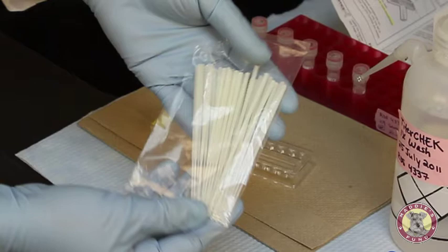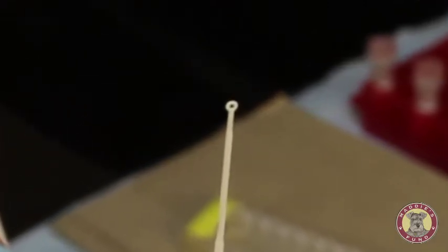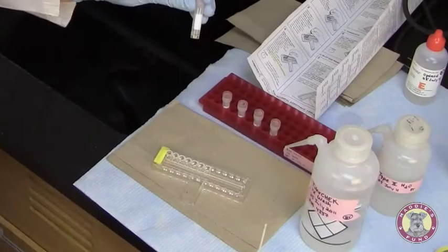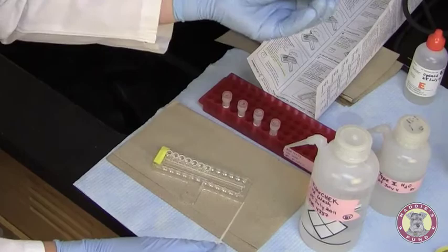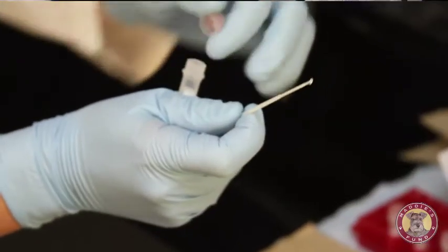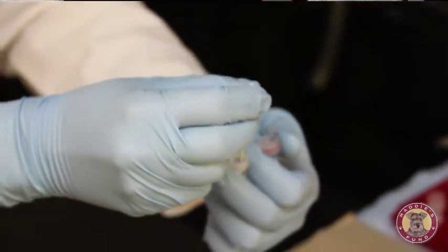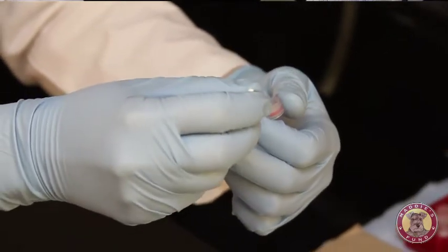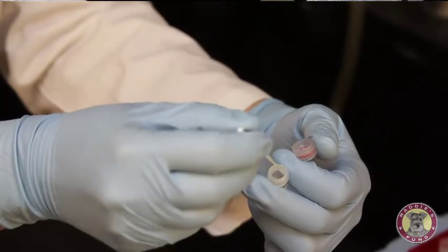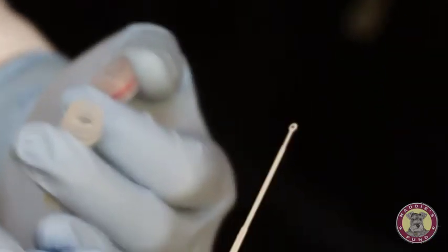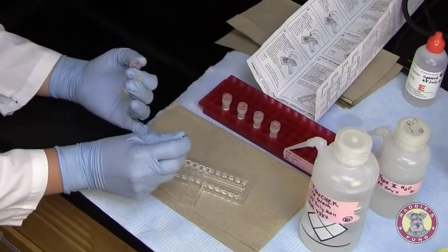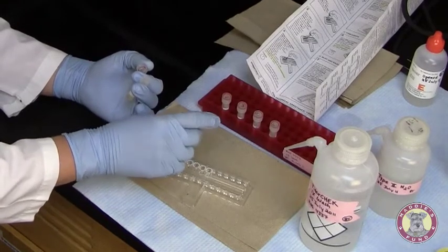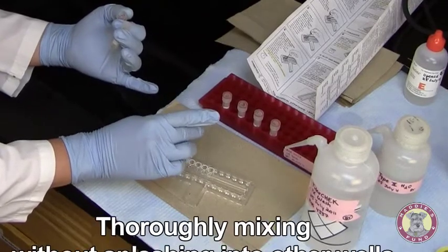I'll next use the sample loops to inoculate each of the wells. As you can see, the loops are very, very small. It's important that you get an accurate sample rather than just an air bubble forming in the end of the loop. So I'll take my first sample, mix it well, insert the loop in the air bubble. Sometimes it helps to work the loop around. I can see I have a nice sample inside the end of my loop. I will then insert it into my first sample well. I'm moving the loop back and forth, thoroughly mixing but not splashing into the other wells.